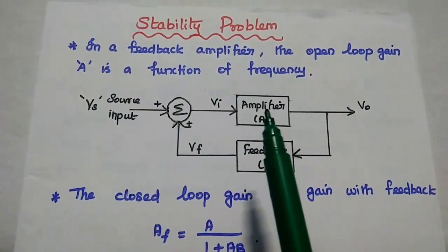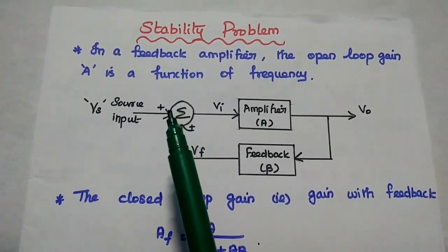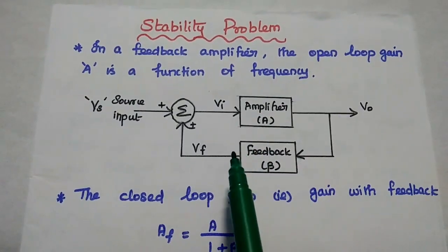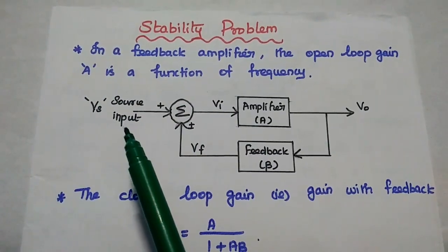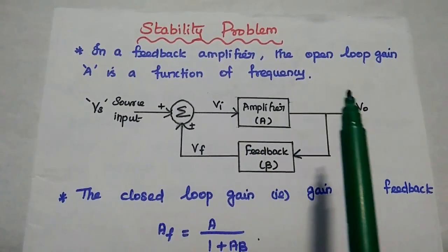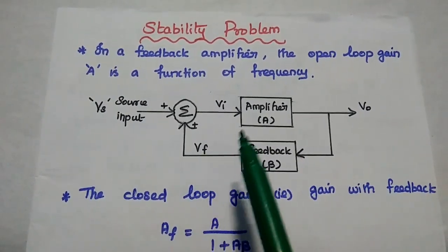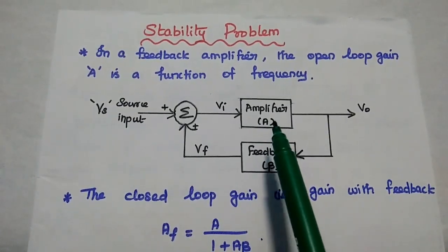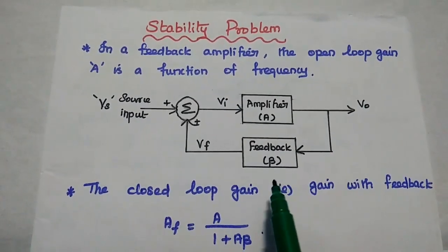We consider a feedback amplifier with a gain A, which is a function of frequency. This is the basic structure of the feedback amplifier. Here the source input is Vs, the actual input to the amplifier is Vi, the output voltage is Vo, and the feedback signal is Vf. Here A is the open loop gain of the amplifier, and beta is the feedback factor in the network.